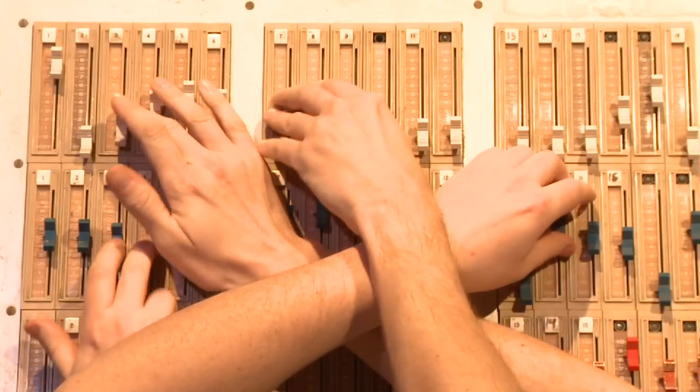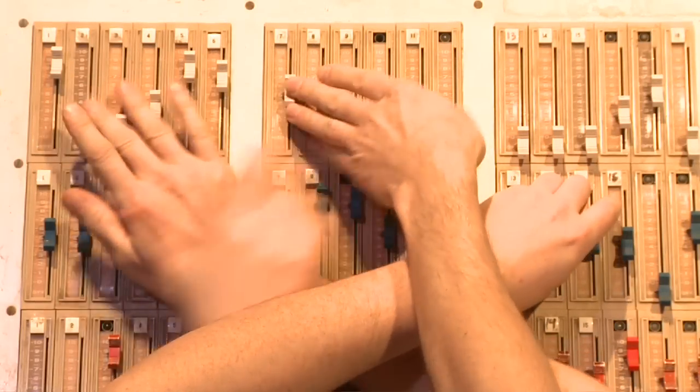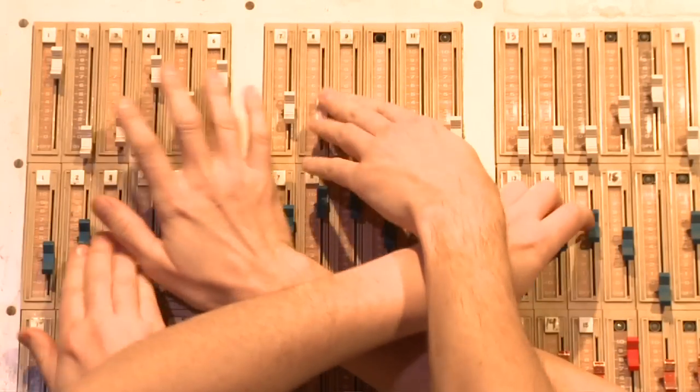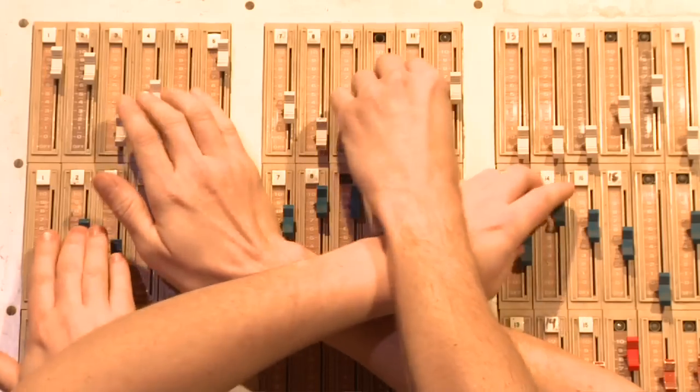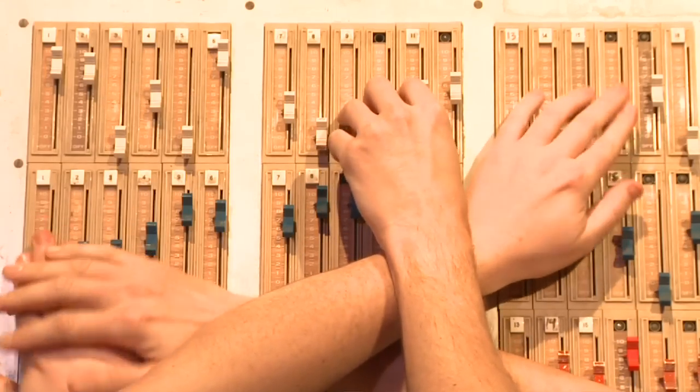Unlike the resistance dimmers, where unchanging levels track forward, the preset board requires the user to create the entire lighting look on each bank of faders. Let's use the same example as earlier.